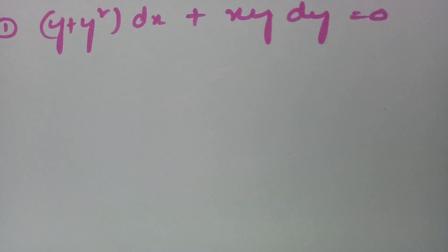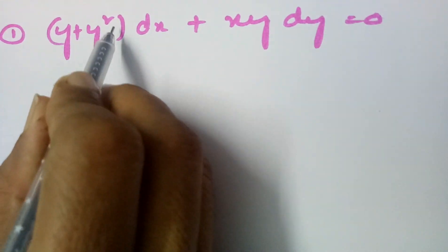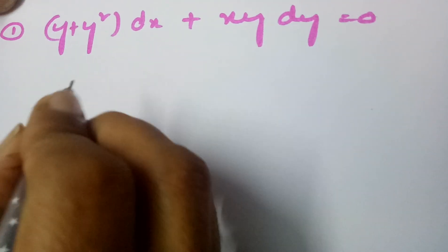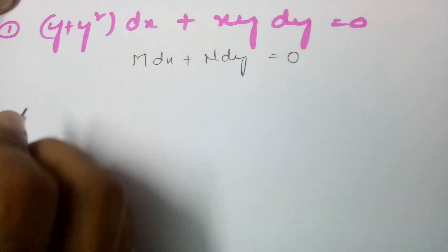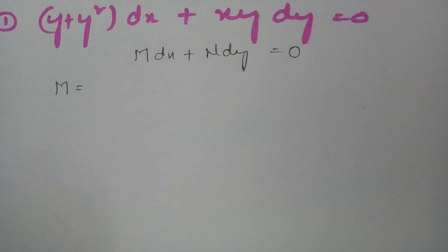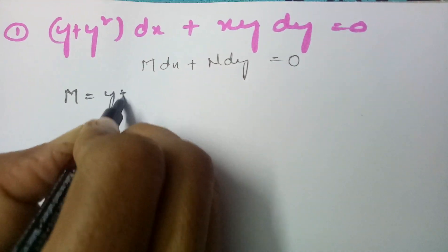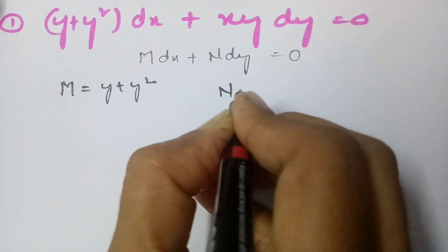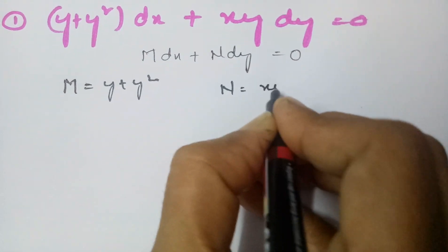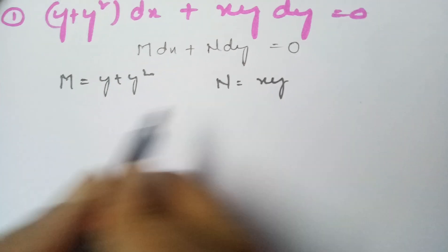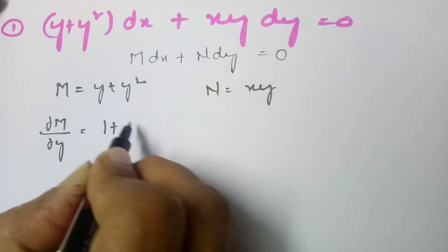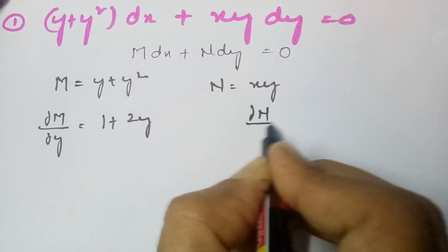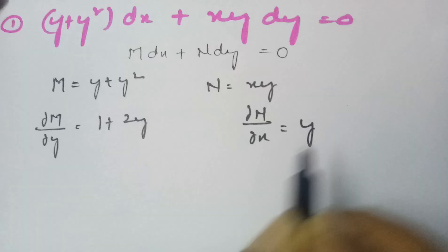Consider the equation (y + y²)dx + xy dy = 0. This is of the form M dx + N dy = 0. So M = y + y² and N = xy. We compute dM/dy = 1 + 2y and dN/dx = y.